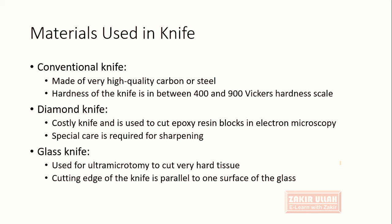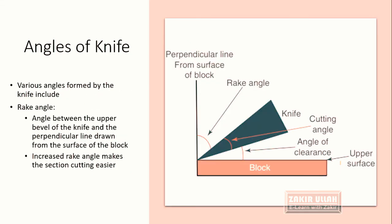Different angles are formed during the interaction between the knife, the block, and the microtome. The first angle is called the rake angle. The rake angle is the angle between the perpendicular line and the upper level of the knife.